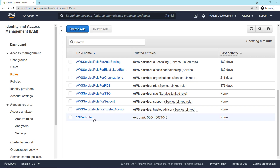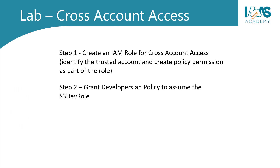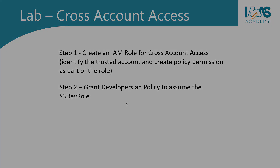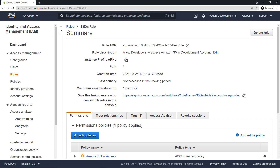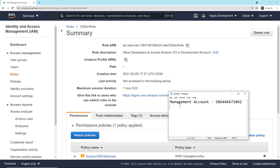Now that we have the role created, we need to move on to step two. Step two involves granting the developers an IAM policy to be able to assume the S3 dev role, and this needs to be done in the management account because that's where the developers are hosted. But before you go back, there's a piece of information you need from the development account — specifically, you need the role ARN, the Amazon Resource Name of that S3 dev role. Click into the role and there's your role ARN. Copy that and put it into your notepad document for reference.